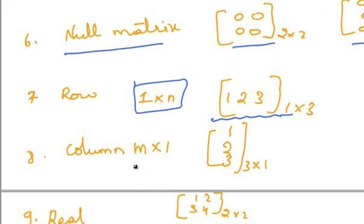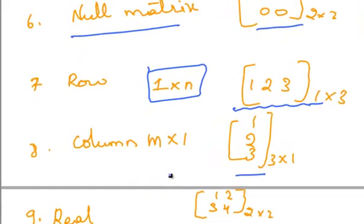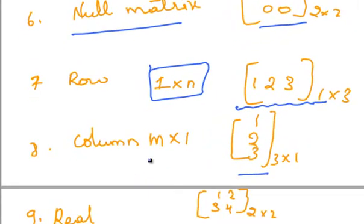Column matrix — a matrix which consists of only one column is known as a column matrix. The basic order of the column matrix is m by 1.